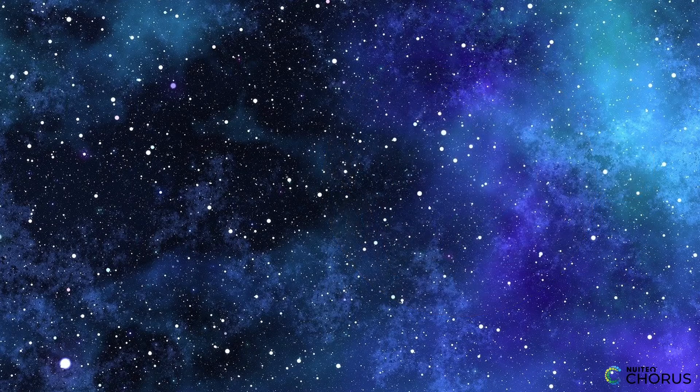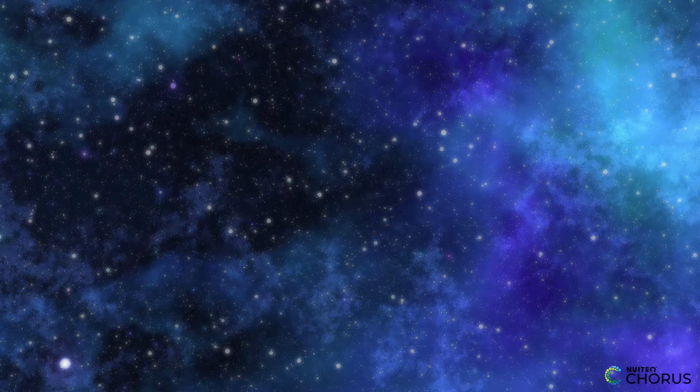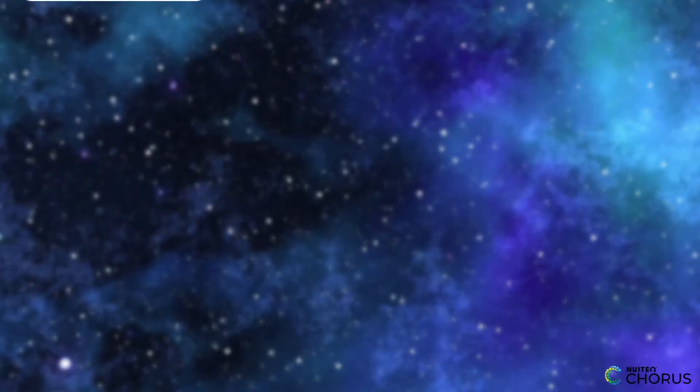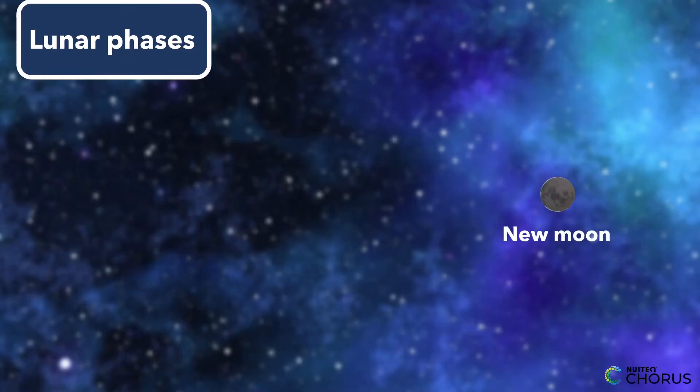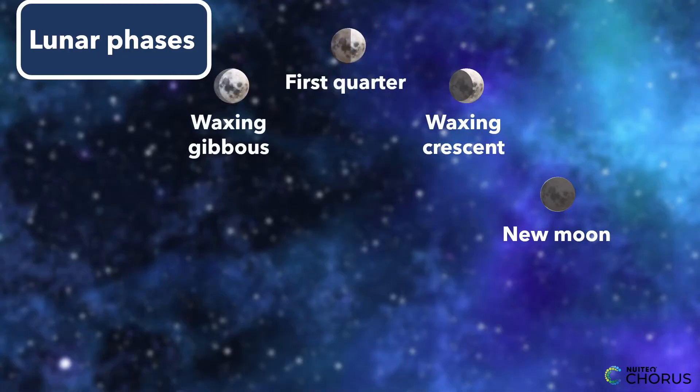As the Moon is going around the Earth, its shape that we see in the sky changes. We call this the lunar phases. It starts as a new Moon, which means it's not visible in the sky. Then it becomes a crescent, then a quarter Moon, then a gibbous Moon, then a full Moon, and then it goes back to a new Moon.